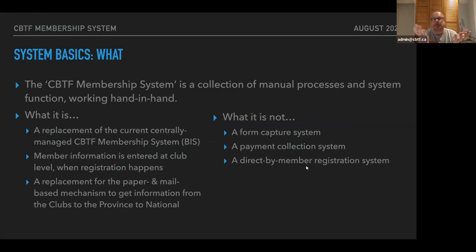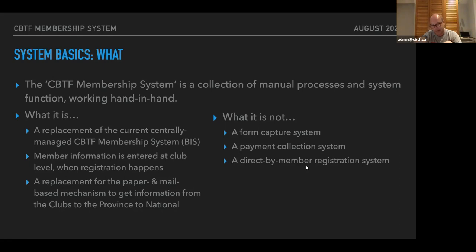What is the system? The membership system is a collection of both manual processes and system functions all working hand in hand. It's a replacement for the current centrally managed CBTF membership system. In the current system, membership information flows basically by paper until it gets to the national registrar, where things get entered into the system. This turns that around: the membership information is received at the club level, entered into the system at the club level, and from then on all of the information flow is just electronic — not paper.